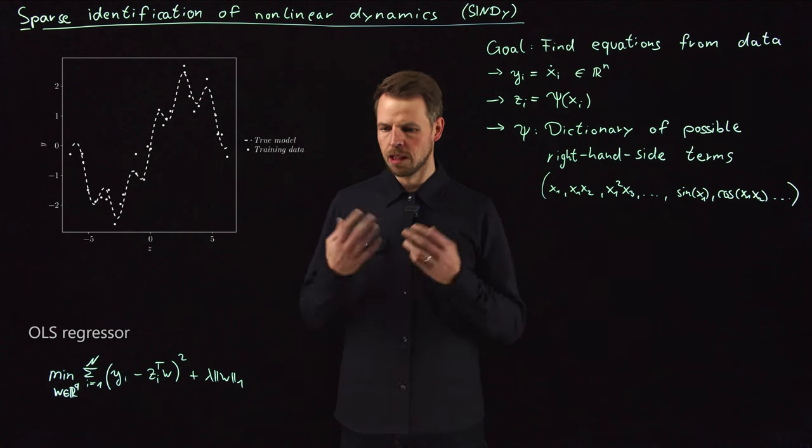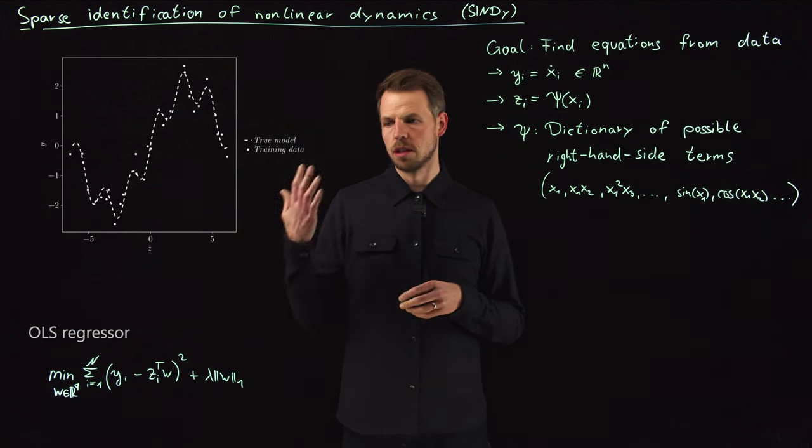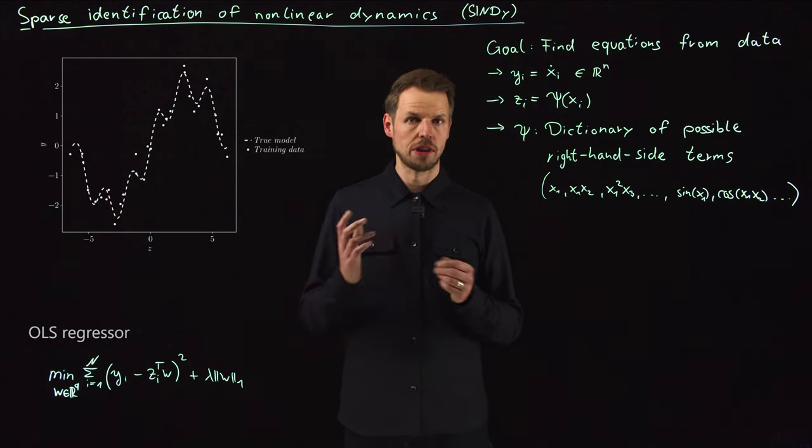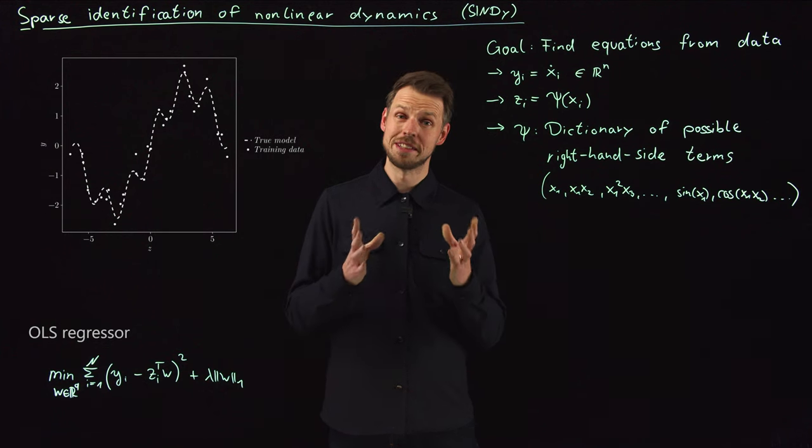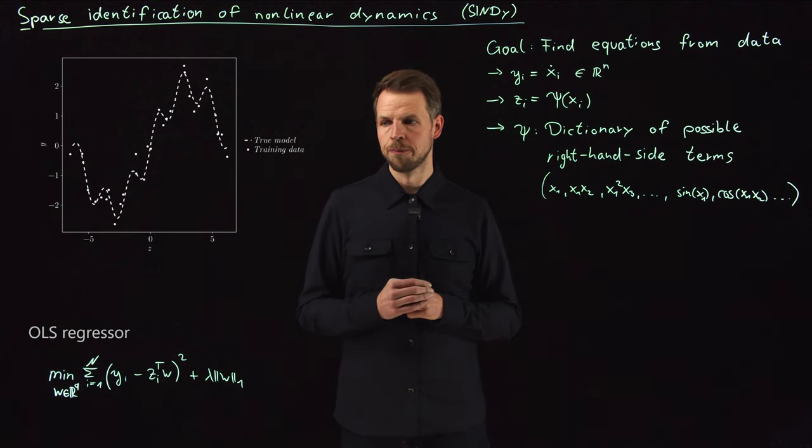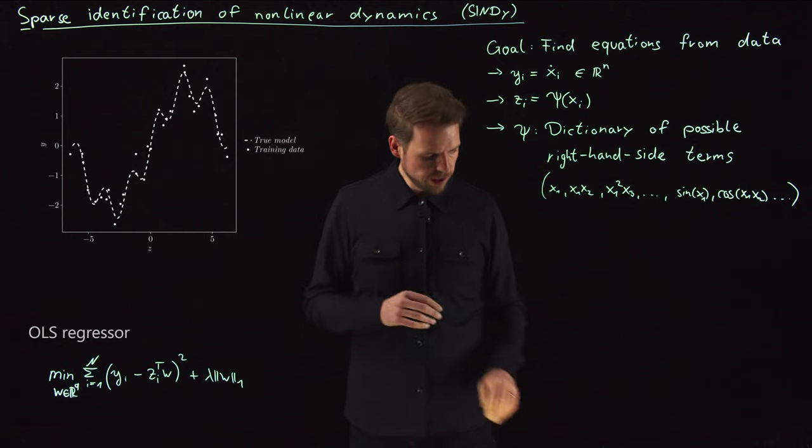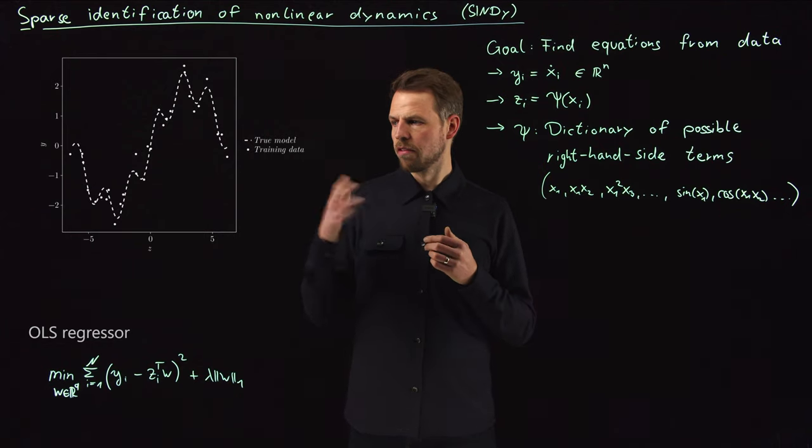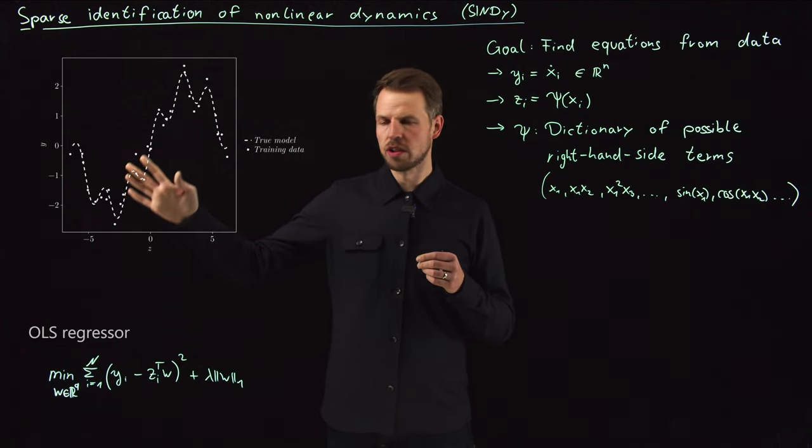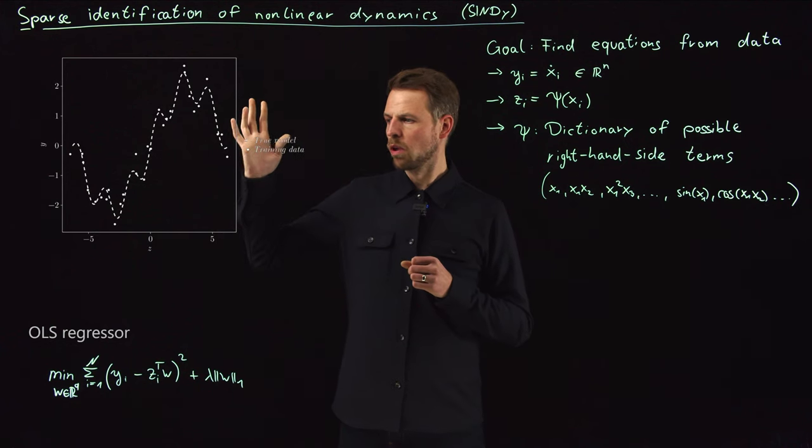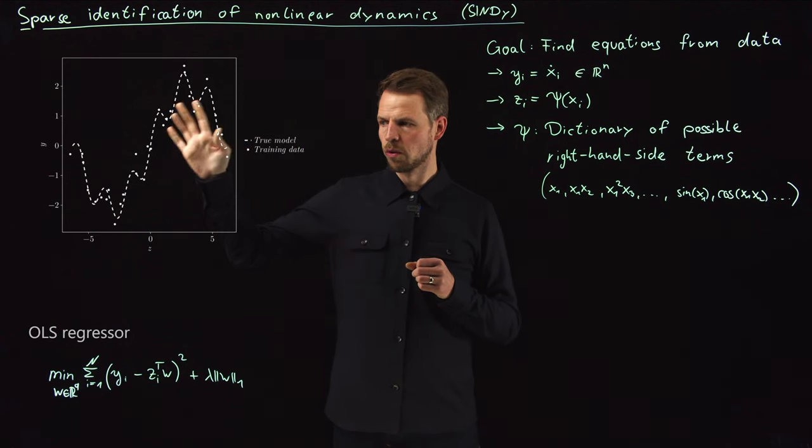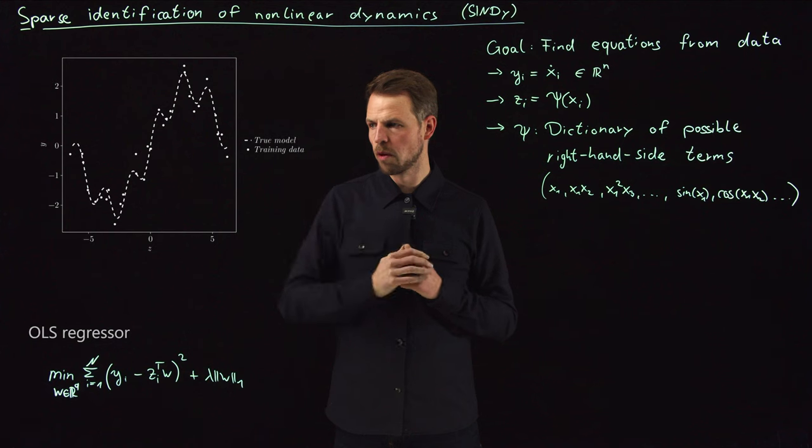This concerns regularization, cross-validation for selecting regularization parameters, in particular the lasso algorithm. I want to use a very simple example that we see here to start with, to discuss what we have seen in terms of regularization and parameter selection.